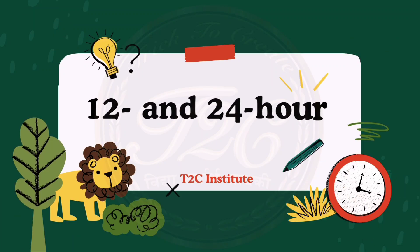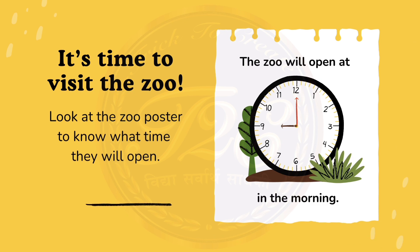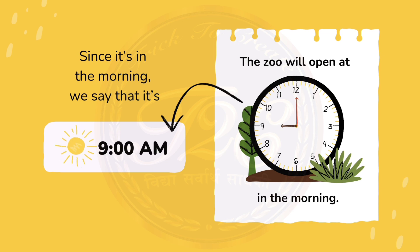Today we are back with the most confusing topic: the 12 and 24-hour clock. Here it is time to visit a zoo. What is the time mentioned over there? Yes, it is 9 a.m.